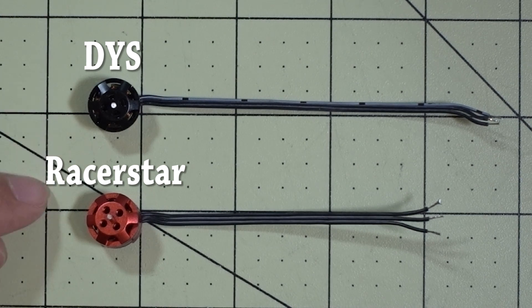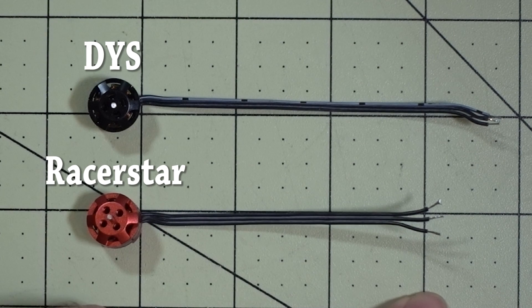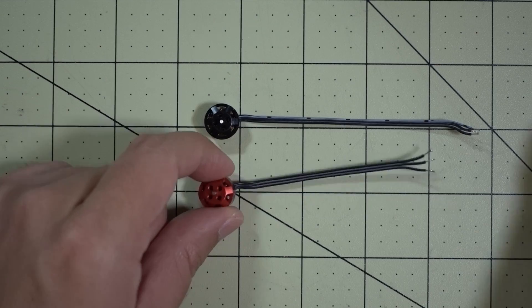Let's see if there's any differences between the two. First off, right off the bat we can see that the motor wires are a little bit longer on the DYS versus the Racerstar. If you look at the top of the bells here...